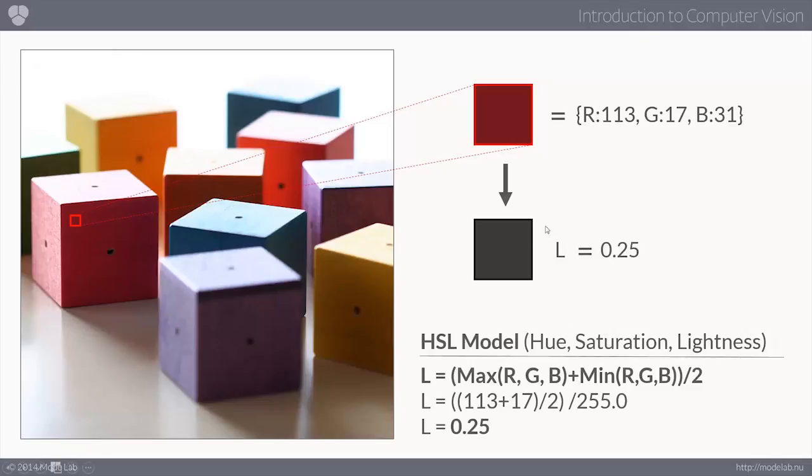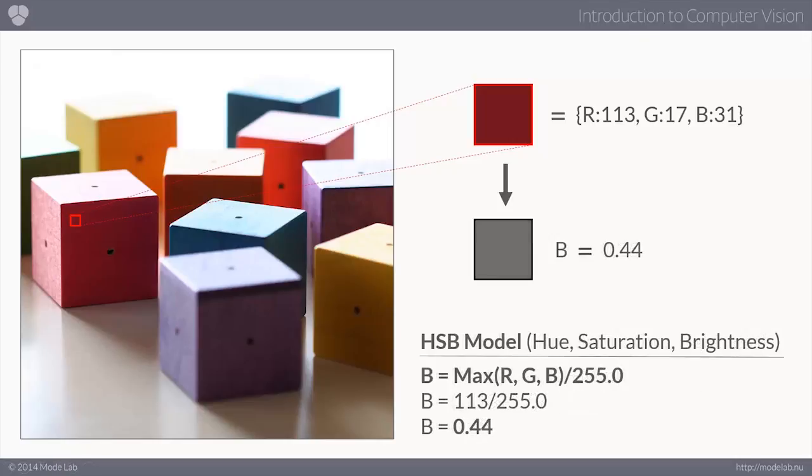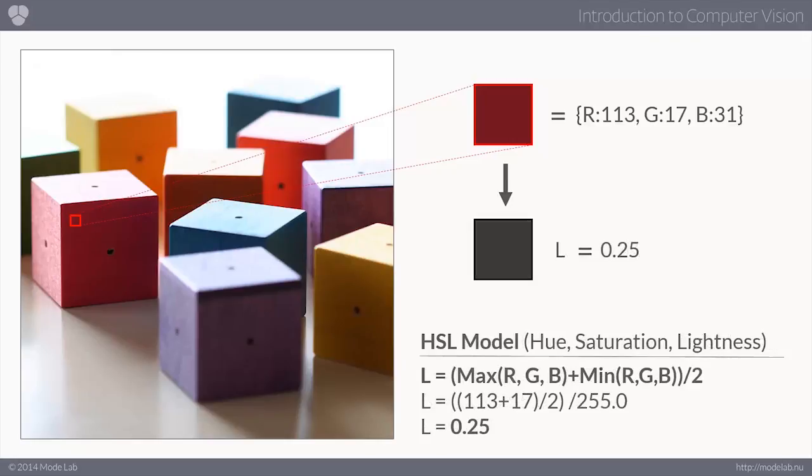So in this case, we're seeing a discrepancy in how the different models treat brightness or lightness. In the example before, our brightness value was 0.44, or 44%. In this case, it's actually 25%. So in this model, it treats that color as only 25% as light.